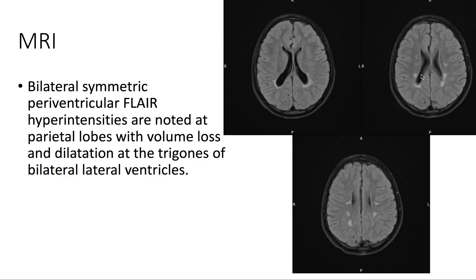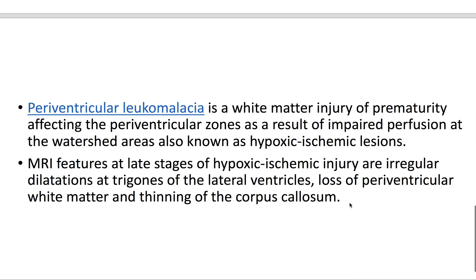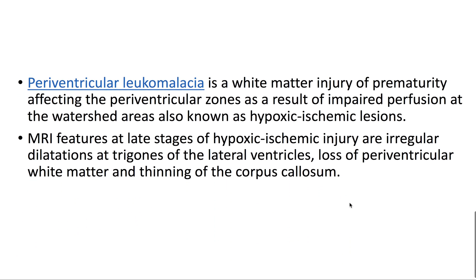Periventricular leukomalacia is a white matter injury of prematurity affecting the periventricular zones, as a result of impaired perfusion at the watershed areas.